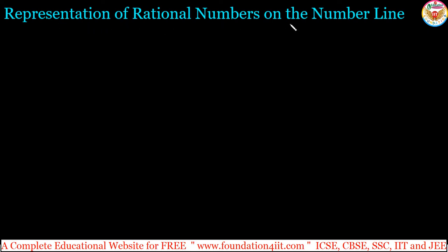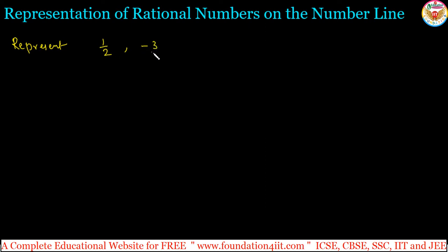Representation of rational numbers on the number line. We have two or three methods. One simple technique we will see — how to represent any rational number on the number line. For example, let us represent 1/2, -3/2, -5/3, and 4/3 on a number line.